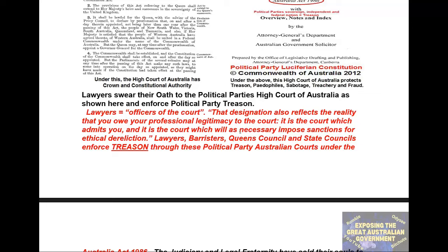Lawyers swear their oath to the Political Party's High Court of Australia and enforce political party treason. Lawyers equal officers of the court. That designation also reflects the reality that you owe your professional legitimacy to the court — it is the court which admits you, and it is the court which will, as necessary, impose sanctions for ethical dereliction. Lawyers, barristers, Queen's Counsel and state counsels enforce treason through these political party Australian courts under the Australia Act 1986. The judiciary and legal fraternity have sold their souls to the devil.